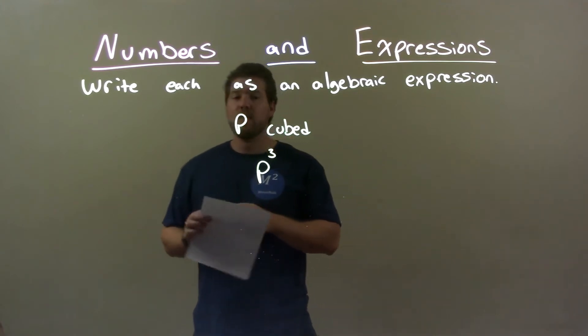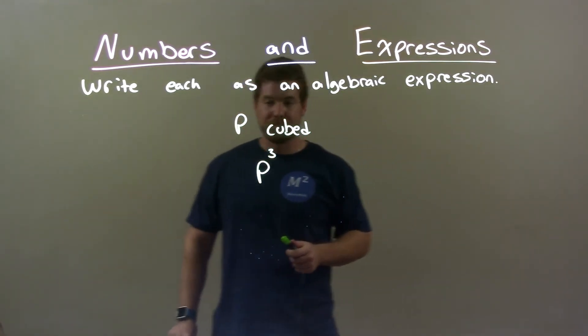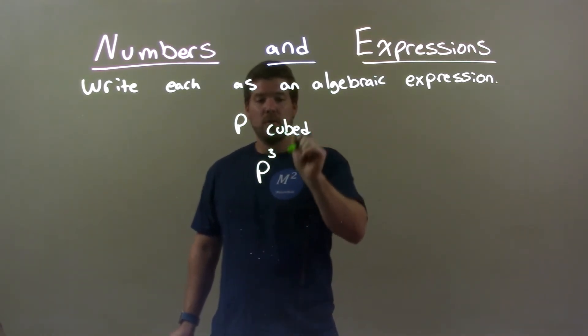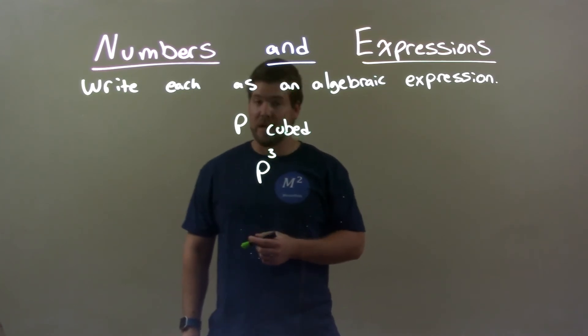Quick recap: we're given p cubed, and we need to write that as an algebraic expression. We start with the variable p, and then the cubed part. Cubed means we raise it to the third power, and so there we have our final answer.